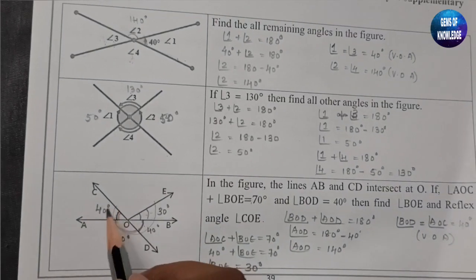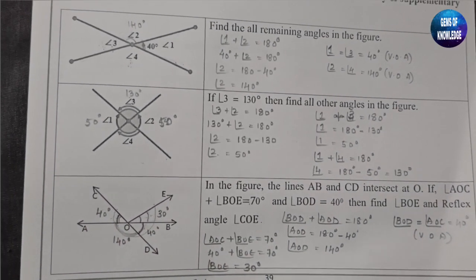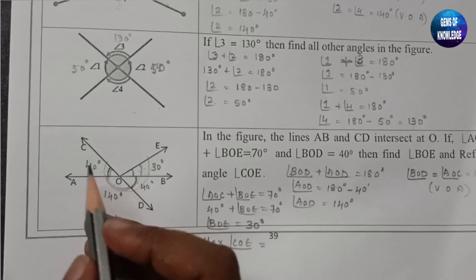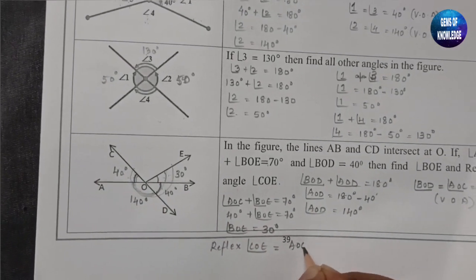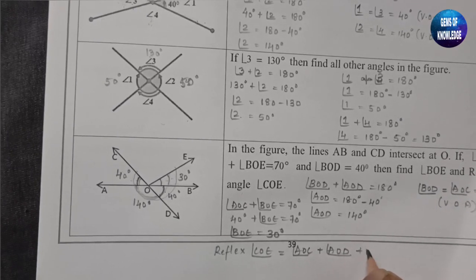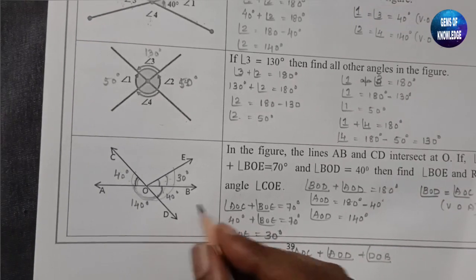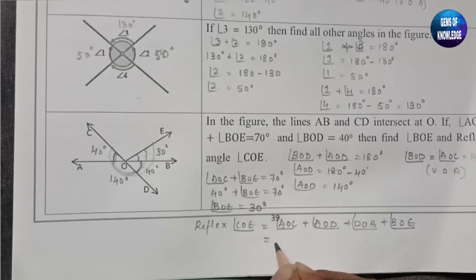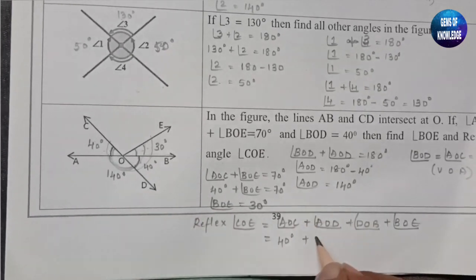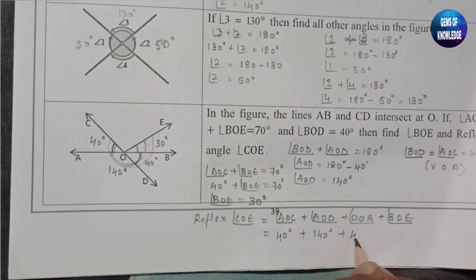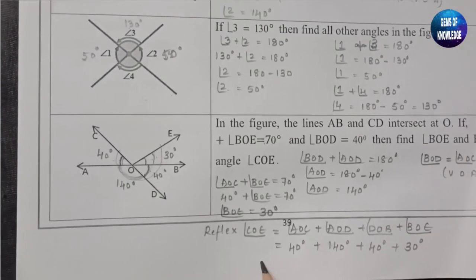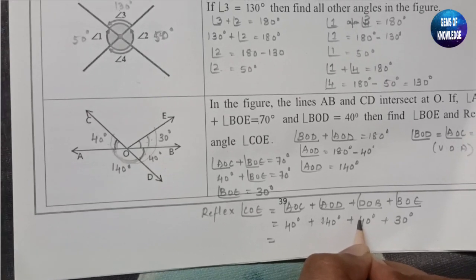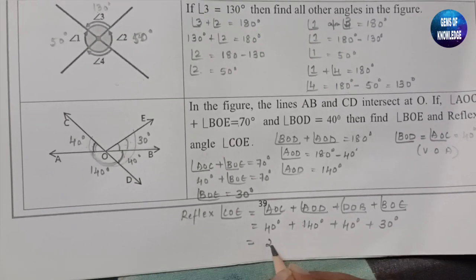Now we find the reflex angle COE. Reflex angle COE equals angle AOC plus angle AOD plus angle DOB plus angle BOE. That is 40 plus 140 plus 40 plus 30 degrees. So 40 plus 140 is 180, plus 40 is 220, plus 30 gives the reflex angle COE equals 250 degrees.